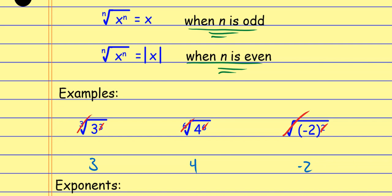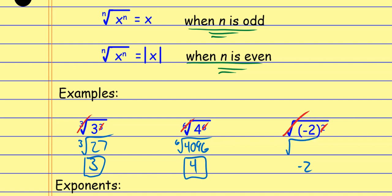Breaking it down: the cube root of three-to-the-third — that's the cube root of 27, which is three. Four to the sixth power is 4,096, and the sixth root of 4,096 gives four. So the first two are correct. But the last one: negative two squared is positive four, and the square root of positive four is positive two, not negative two. That's what makes it wrong. Slapping absolute value around it gives the correct answer.